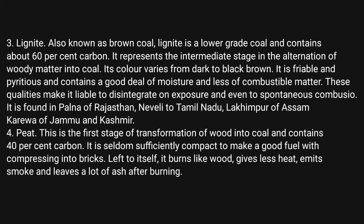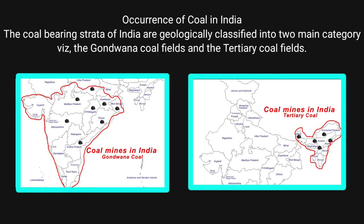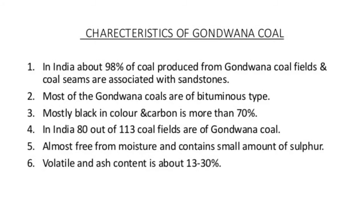Peat is considered the lowest grade of coal. The occurrence of coal in India is geologically classified into two main categories: Gondwana coal fields and tertiary coal fields. About 98% of the coal found in India comes from Gondwana coal fields, which are of bituminous type, more black in color, and have a carbon content of more than 70%. The Gondwana coal was deposited around 200 million years ago, is almost free from moisture, and contains very little sulfur and ash — only about 13 to 30%.